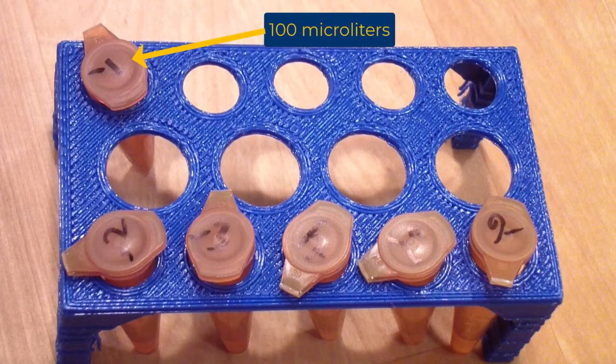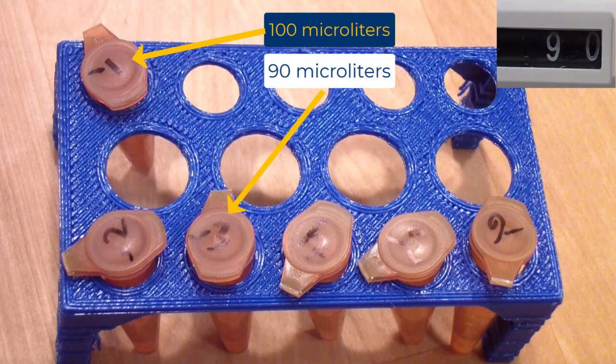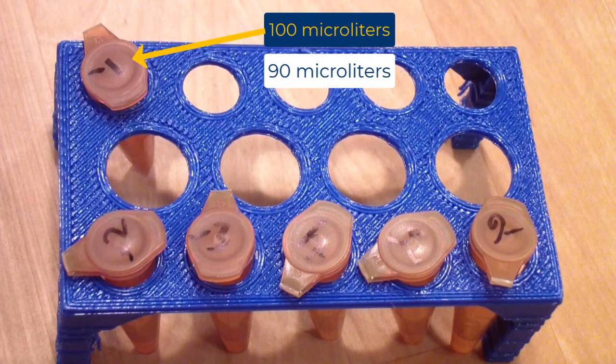You will then pipet 90 microliters into each of the remaining Eppendorf tubes. You may use the same tip for this step.